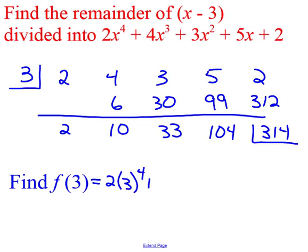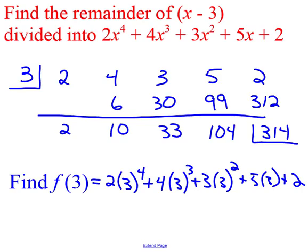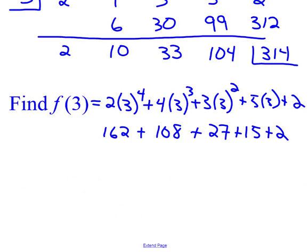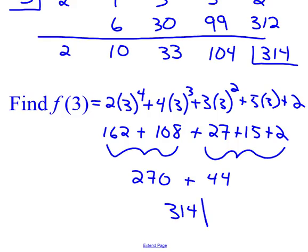Now, what the remainder theorem says is that remainder will be f of 3. And if I put 3 into my equation, and you should try this on your own. But when I do this, I get 81 times 2 is 162, and I get 27 times 4 is 108, and 3 cubed is basically 27, and 15, and 2. This is a lot of math, but when I put this together, I get 270, and when I put that together, I get 37, 42, 44, and my grand total is indeed 314.